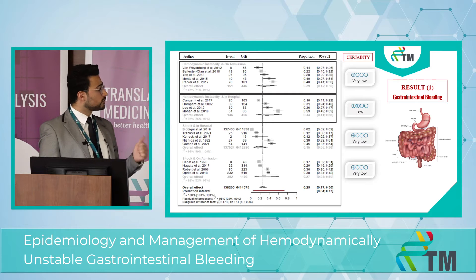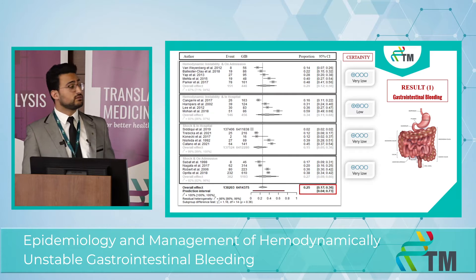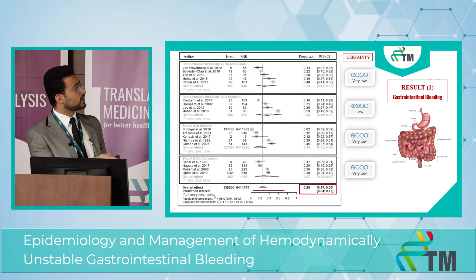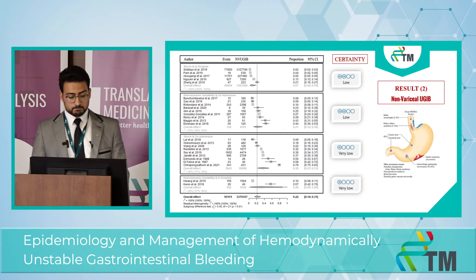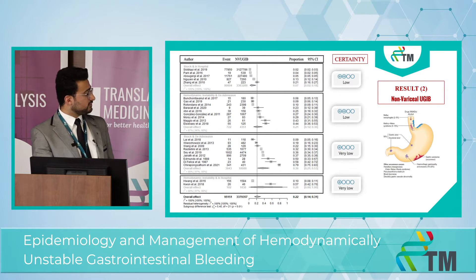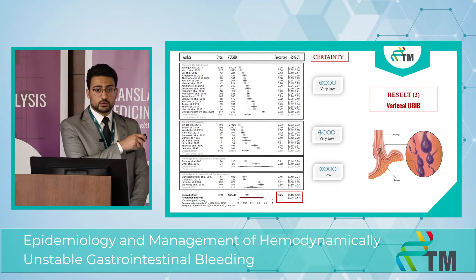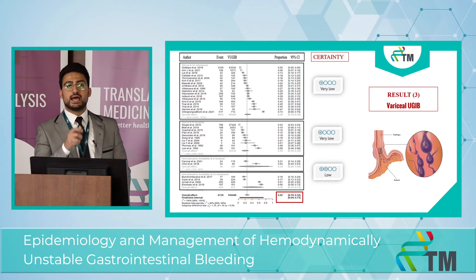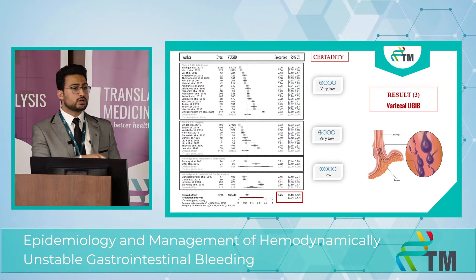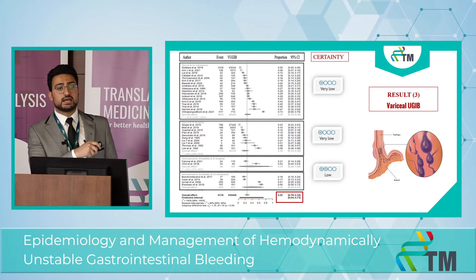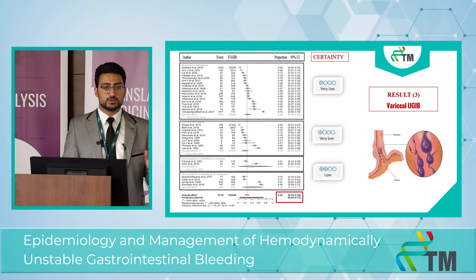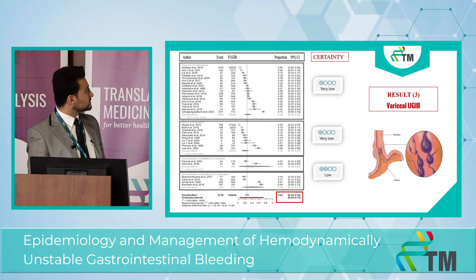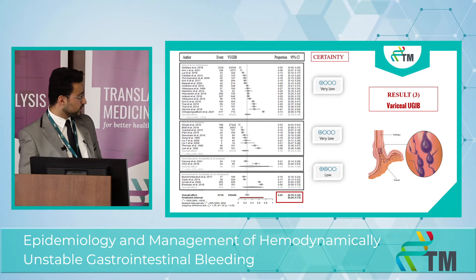In gastrointestinal bleeding overall, 25% of patients developed shock or hemodynamic instability. For non-variceal bleeding, the overall effect was 22%. Looking at subgroups: shock on admission showed a much higher proportion than shock during hospitalization — only 7% developed shock during hospitalization versus 36% during hospital stay. Hemodynamic instability was relatively closer: 21% on admission versus 26% during hospital stay.